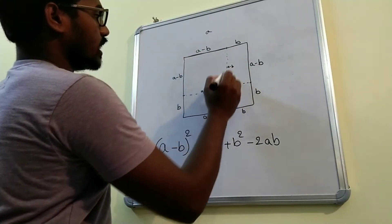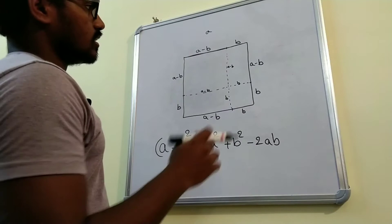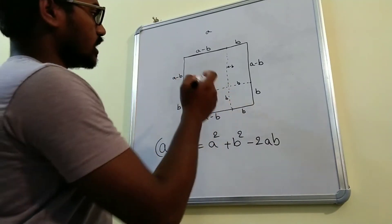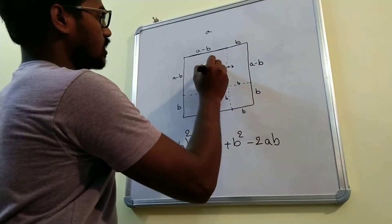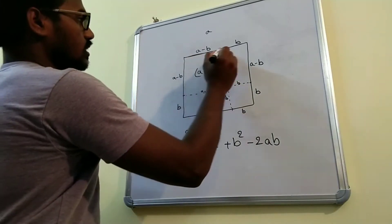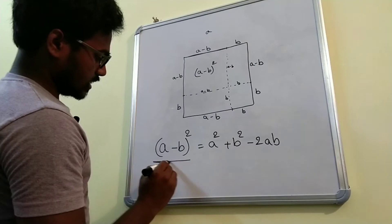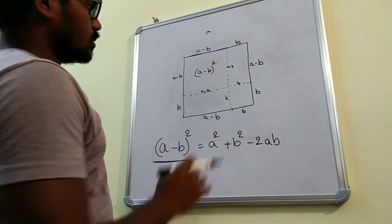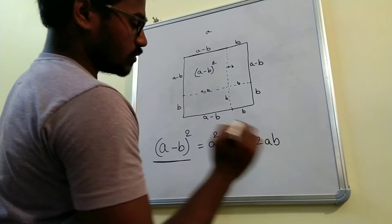So what is the area of this square? The area of a square — if the length is a, it will be a square. Here the length is a minus b, so the area will be a minus b whole square. We have proven the area of this whole part is a minus b whole square, and we will prove the same area is equal to this formula.